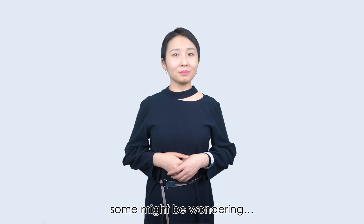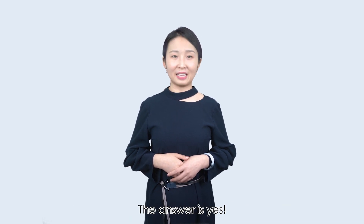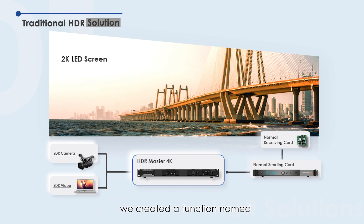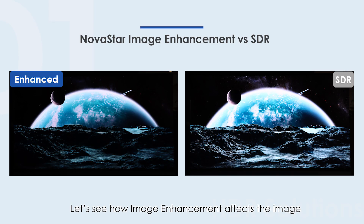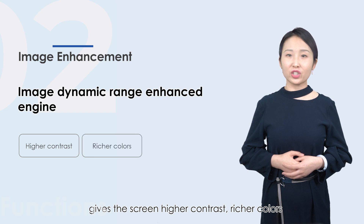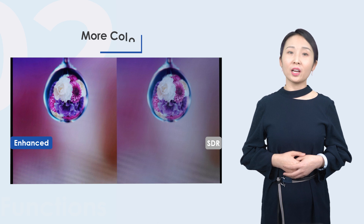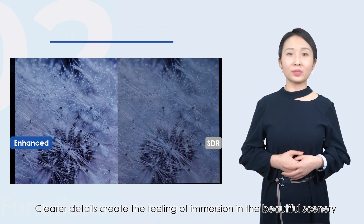After seeing this great result, some might be wondering: can HDR Master 4K work with normal controllers and receiving cards? The answer is yes. In order to help more users experience a better display effect, we created a function named Image Enhancement, which can allow any LED screen to have an HDR effect. Please note that the output is 8-bit when using this function. The Image Enhancement function gives the screen higher contrast, richer colors, and clearer details. Higher contrast makes the picture more clear and detailed. Richer colors make the picture more vivid. Clearer details create the feeling of immersion in a beautiful scenery.